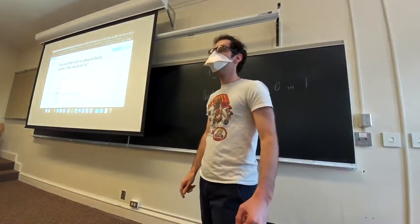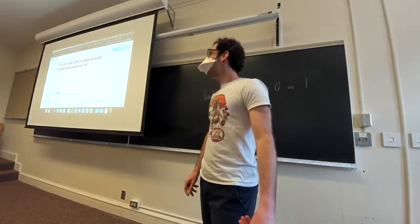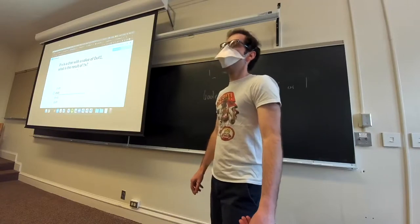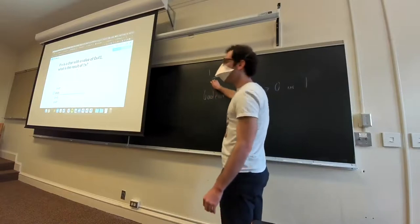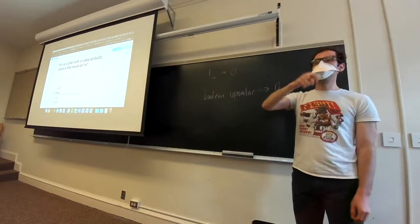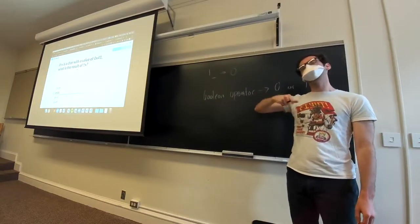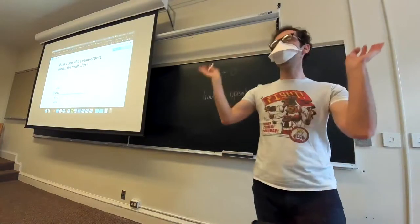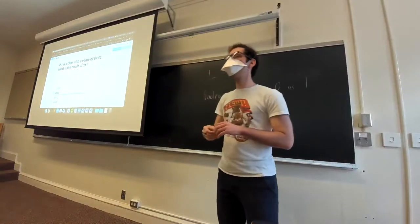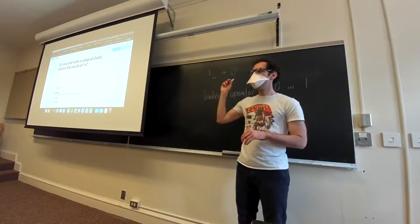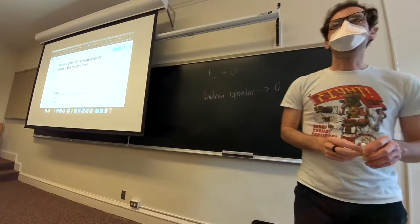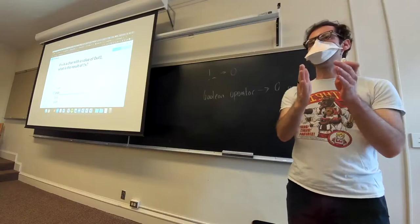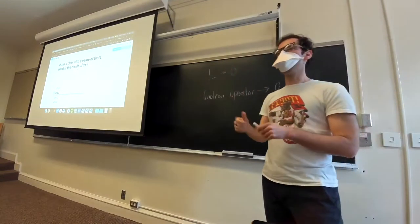If x is 0x00, then !x would give 1 because NOT false is true, and then applying NOT again: !1 gives 0. So if x is 0 we get 0, and if x is anything else we get 1. This will be a useful trick on lab one — being able to take anything that's not zero and turn it into the number 1, distinguished from an input that is 0.